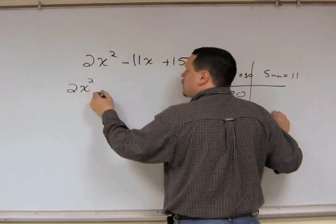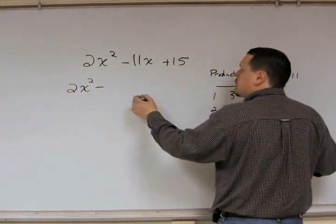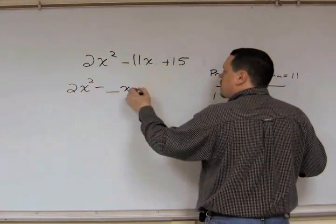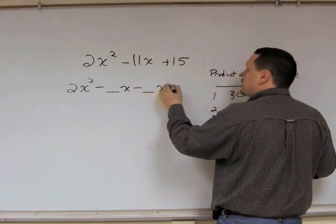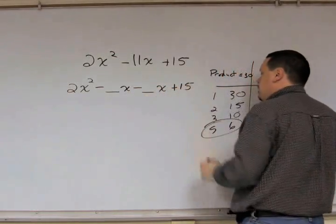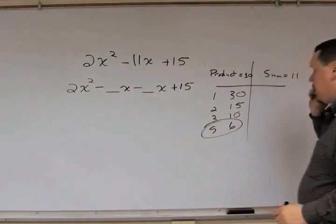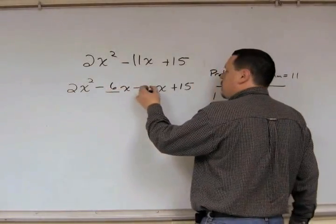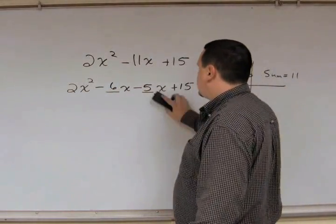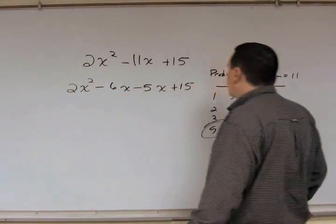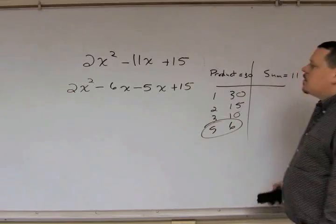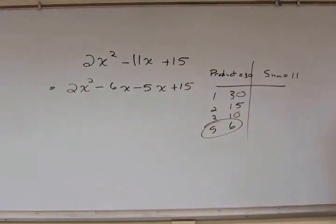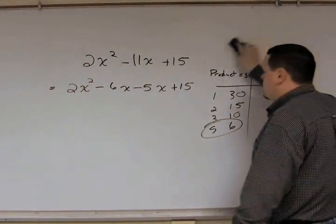Coming back to the problem: 2x² — bring down the first sign, minus — something·x, then minus times plus is minus — something·x — plus 15. Put the larger number first: 6x, and the smaller one second: 5x. So we've taken our trinomial and rewritten it as a four-term polynomial: 2x² − 6x − 5x + 15.